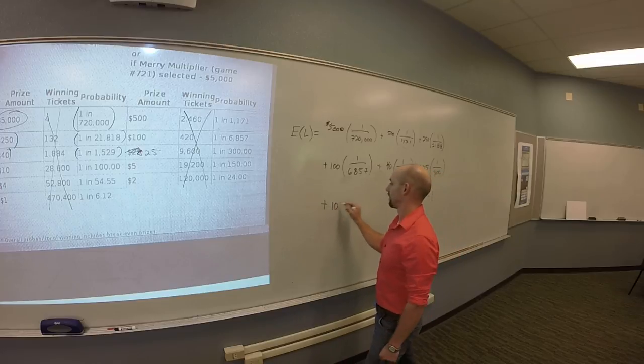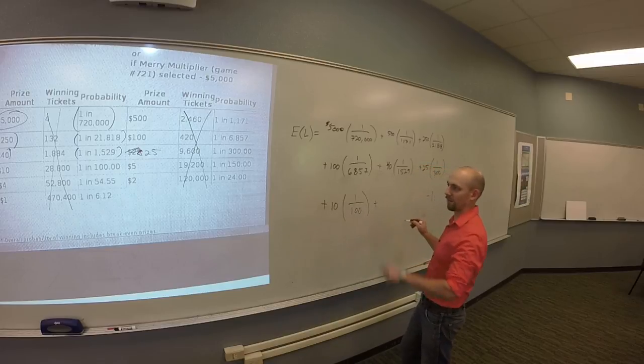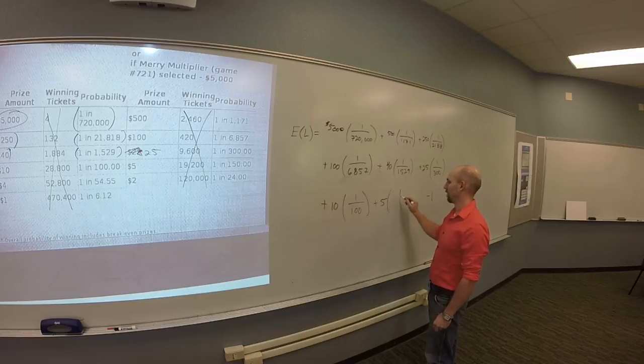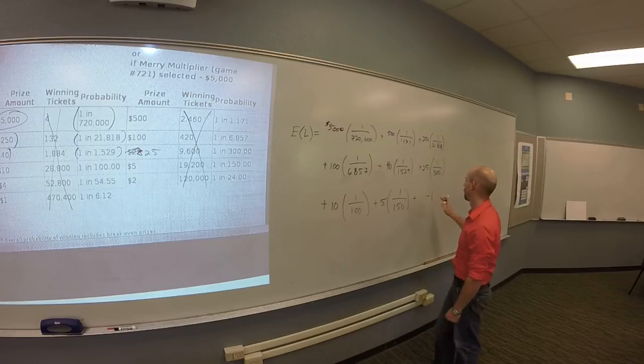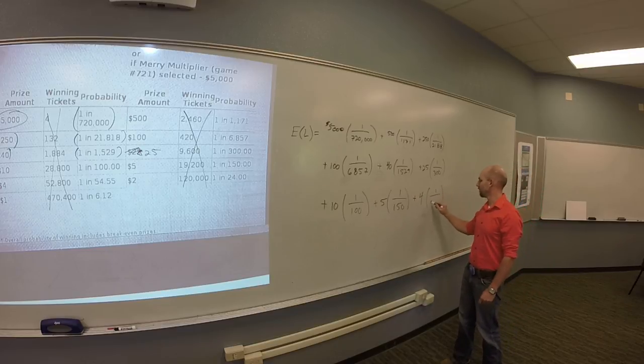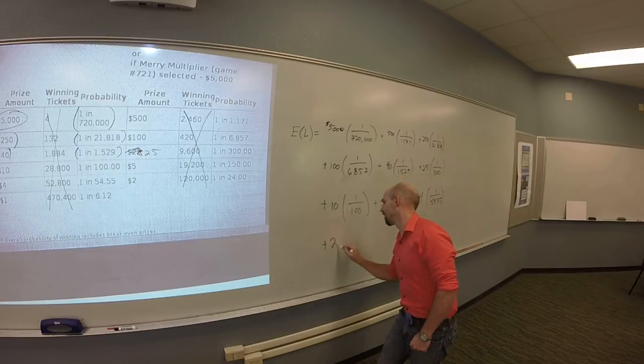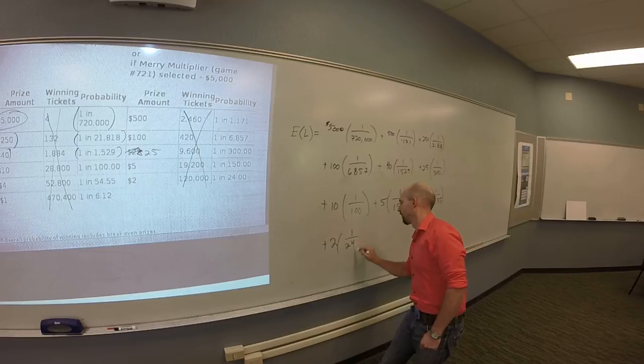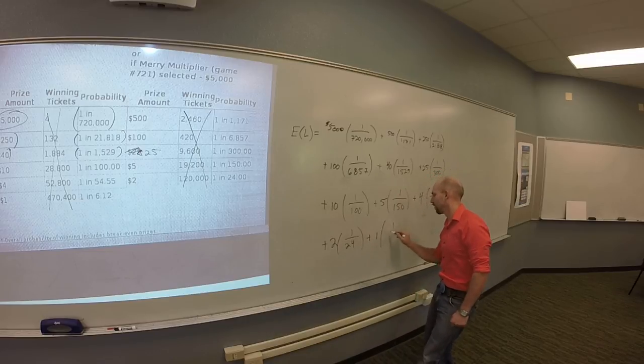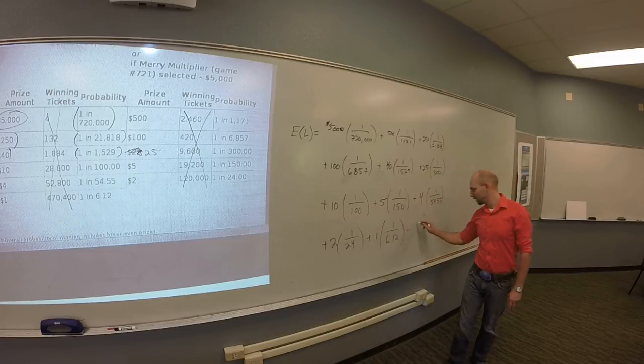And then we got 10 times 1 in 100 and then we got 5 times 1 in 150 and then there's plus, gosh there's a lot of these, 4 and that's 1 in 54.55, weird. And then $2 tickets, those are 1 in 24 and then there's dollar tickets and those are 1 in 6.12.